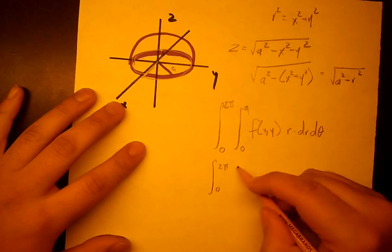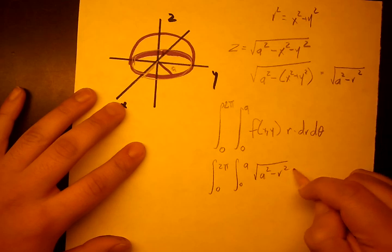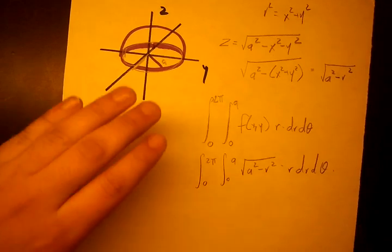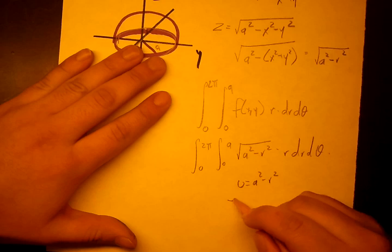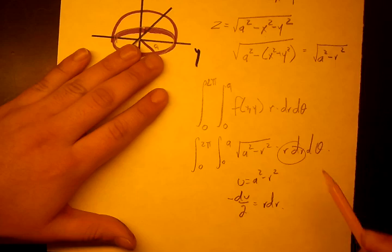So now we have all the parts we need to solve this problem. We're going to rewrite this: 0 to a, radical a squared minus r squared times the r, dr, d theta. And we're going to be using u substitution to take our next step. So u equals a squared minus r squared, so that negative du over 2 equals r dr.